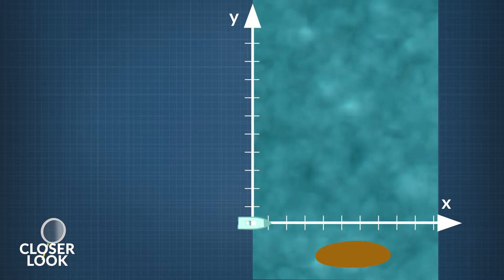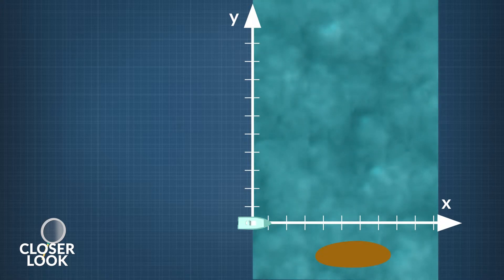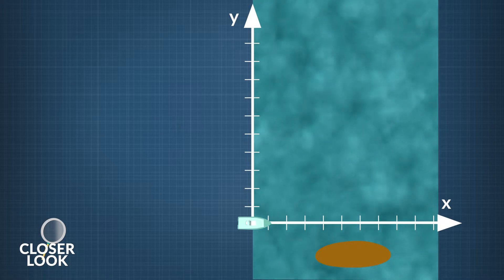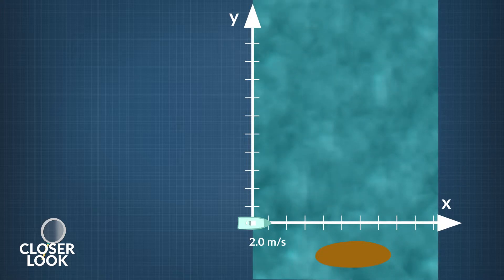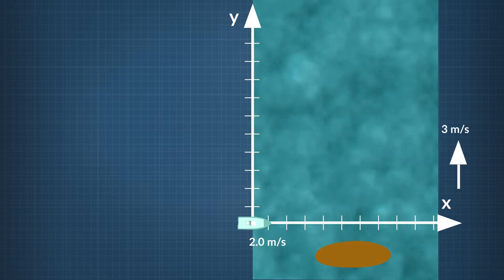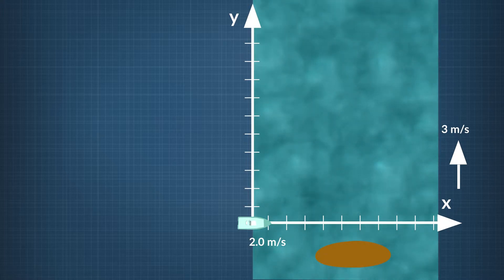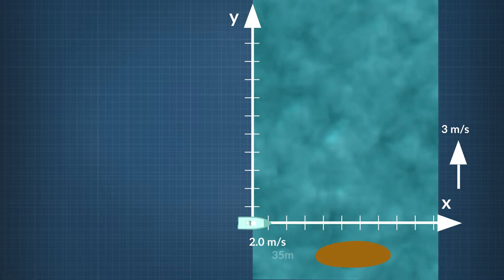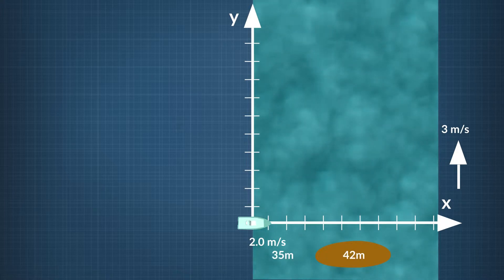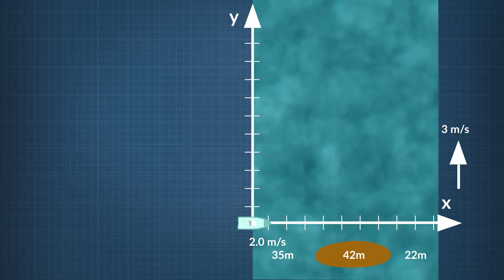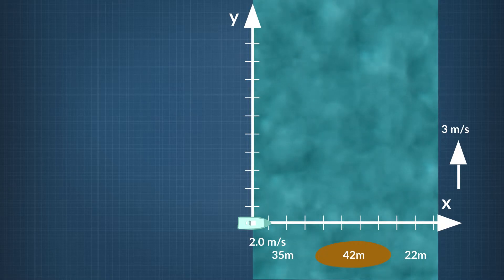A boat pilot leaves shore on one side of a wide river and powers the boat at a constant velocity of 2.0 meters per second perpendicular to the shoreline. The river flows at a steady speed of 3 meters per second, except for the area just downstream of a sandbar, where the river's speed is zero. If the pilot crosses 35 meters of open river, then reaches the 42 meter wide sandbar, then crosses 22 meters of free-flowing river, how far downstream from the point of departure does the boat reach the other riverbank?